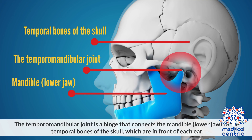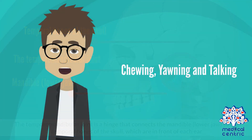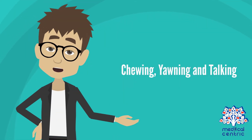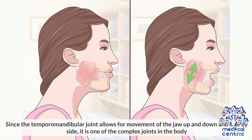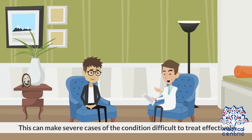The temporomandibular joint is a hinge that connects the mandible, or lower jaw, to the temporal bones of the skull, which are in front of each ear. It allows for the movement needed for chewing, yawning, and talking. Since the temporomandibular joint allows for movement of the jaw up and down and side by side, it is one of the most complex joints in the body. This can make severe cases of the condition difficult to treat effectively.